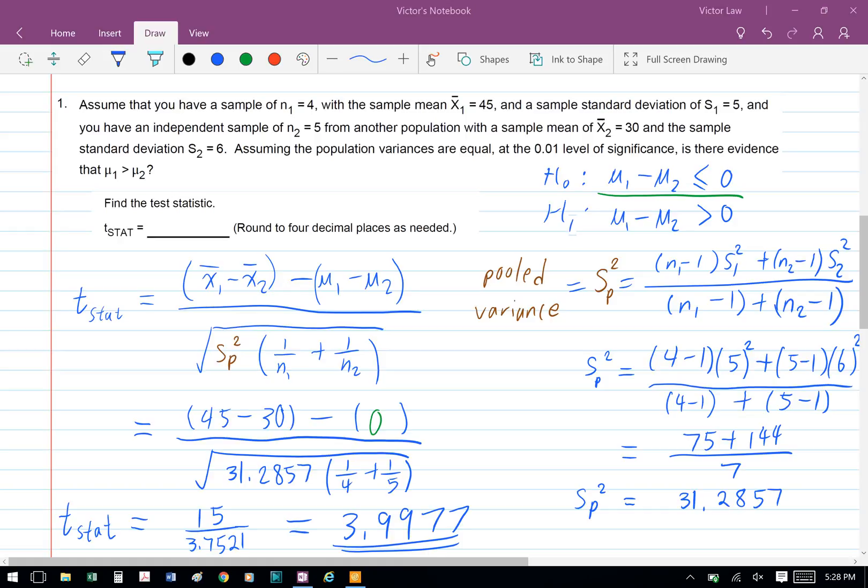After we found the pooled variance, then we can solve for the T statistic. So we have bracket 45 minus 30 bracket minus 0. Mu1 minus mu2 is 0 because that's our H0. And for the denominator, we have square root 31.2857 times bracket 1 over 4 plus 1 over 5 bracket. So our T statistic equals 15 over 3.7521, which equals 3.9977.